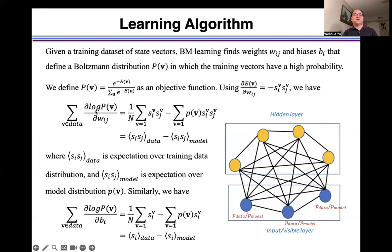The gradient of p with respect to wij is equal to difference between expectation over data distribution minus expectation over model distribution.